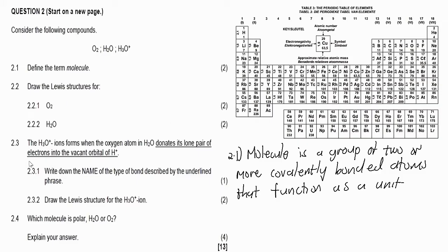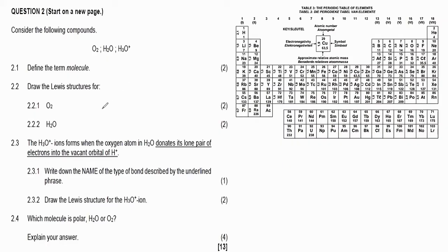Then in 2.2, they say draw the Lewis structures for oxygen gas. Now, what you want to do with drawing the Lewis structure is you want to check your periodic table and identify where your oxygen is in terms of the group number. That's indicating our group number. What we are mostly interested in when drawing the Lewis structure is the valence electrons, so we will look at the Roman figures, which tell us about the valence electrons of each element.